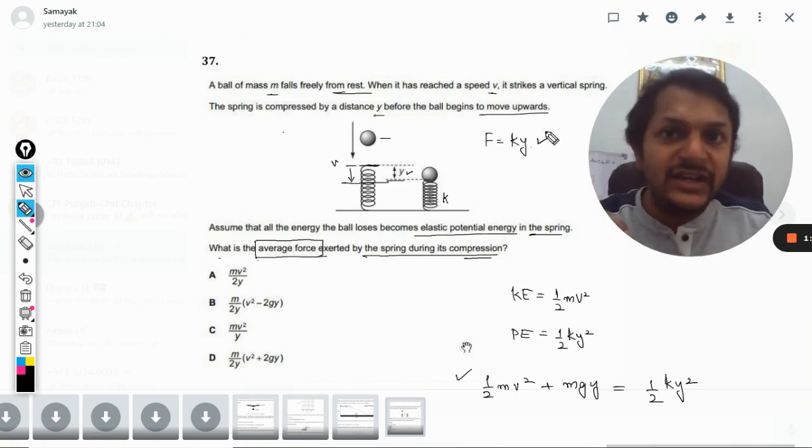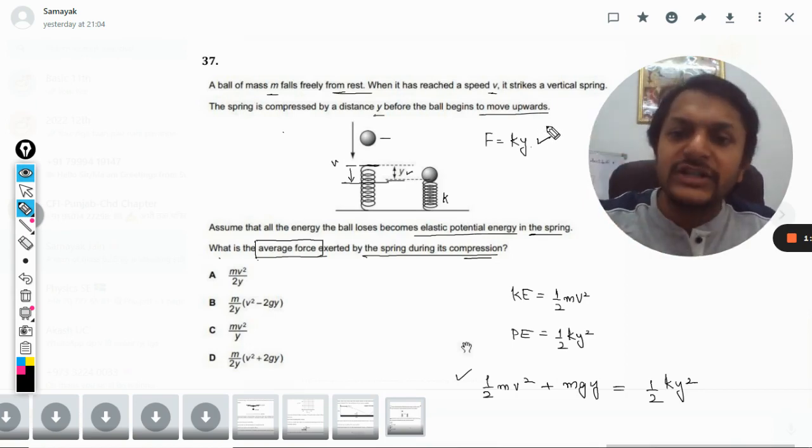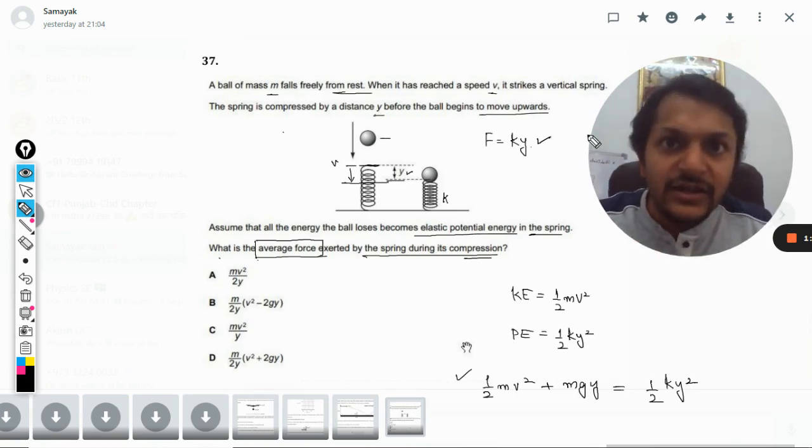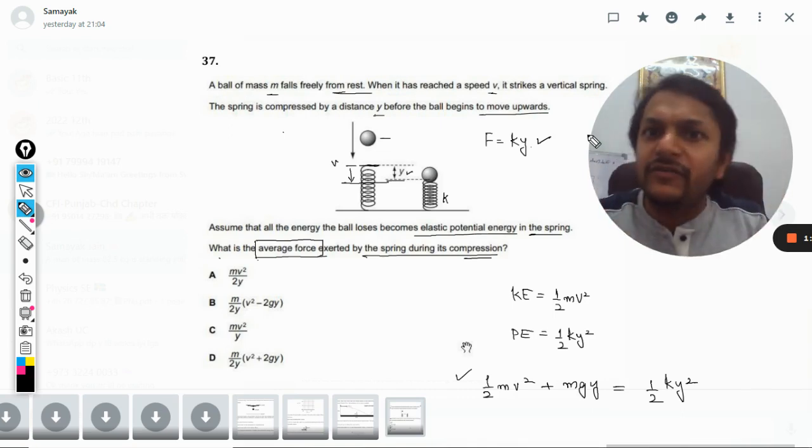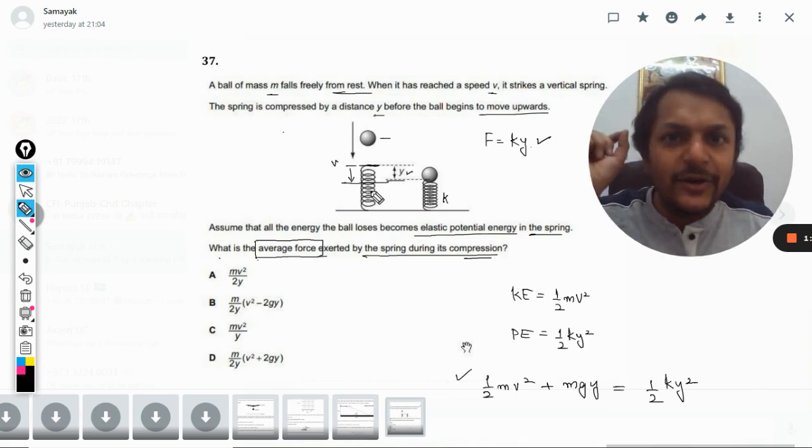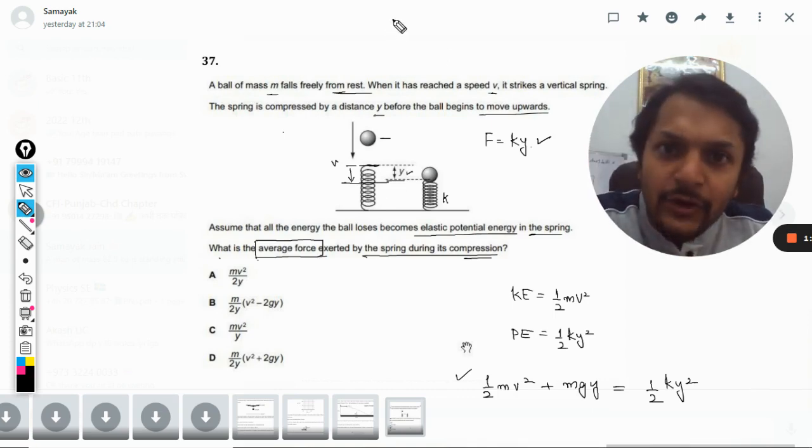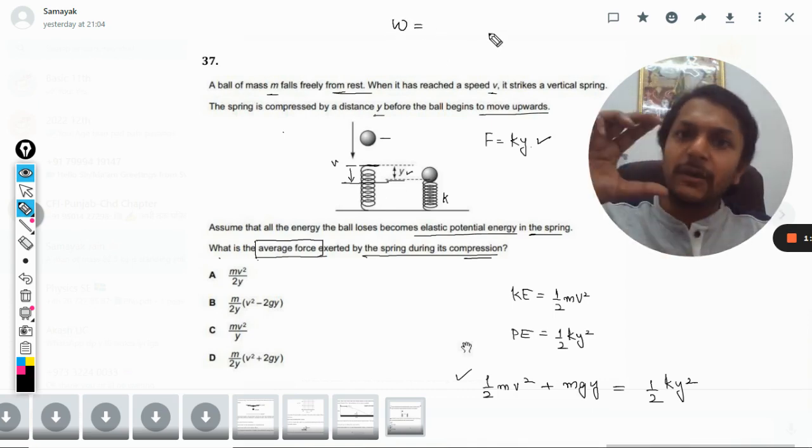So instantaneously, the force is a variable quantity. But because it is said that we want to find an average, now this may serve us as a hint. Like why do you want an average force, and which is the formula where we use average force? It is only and only work.